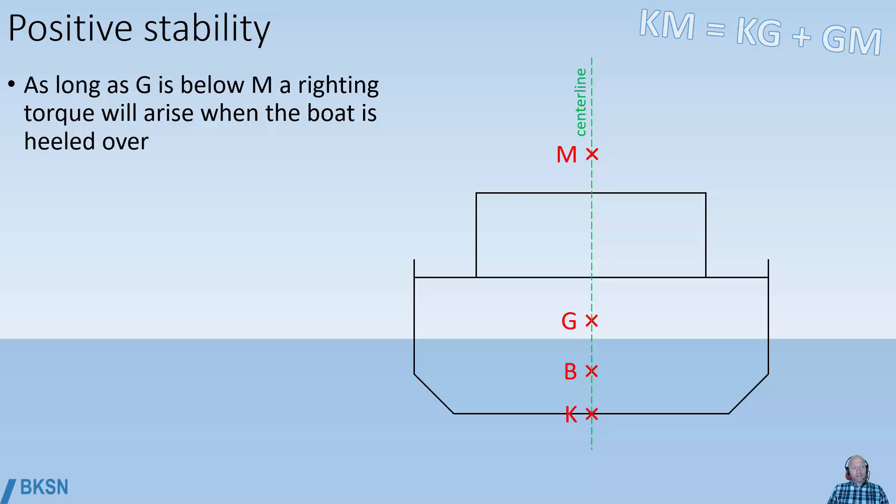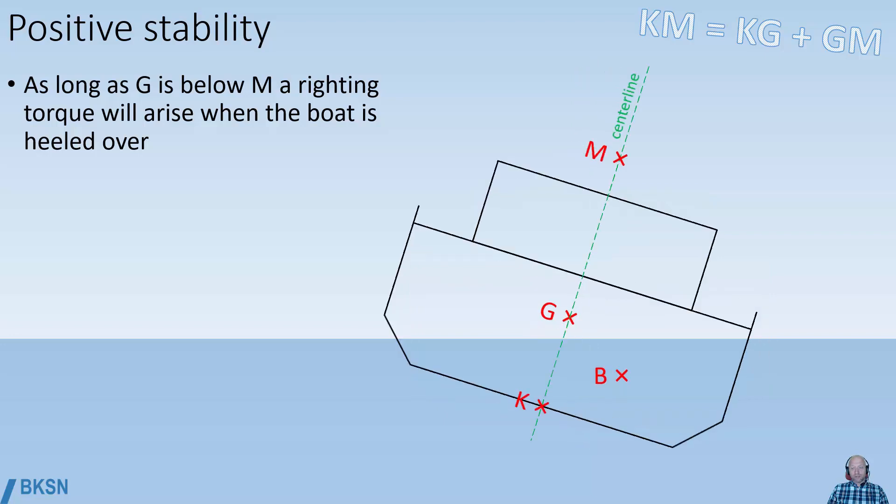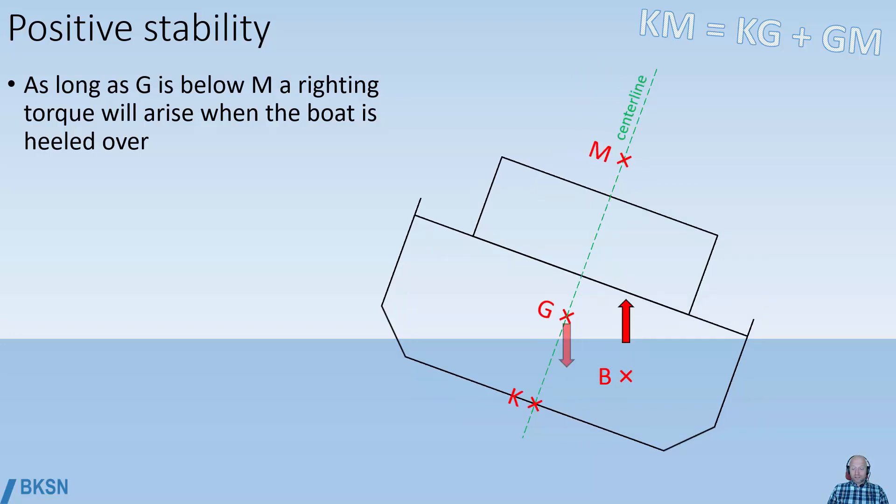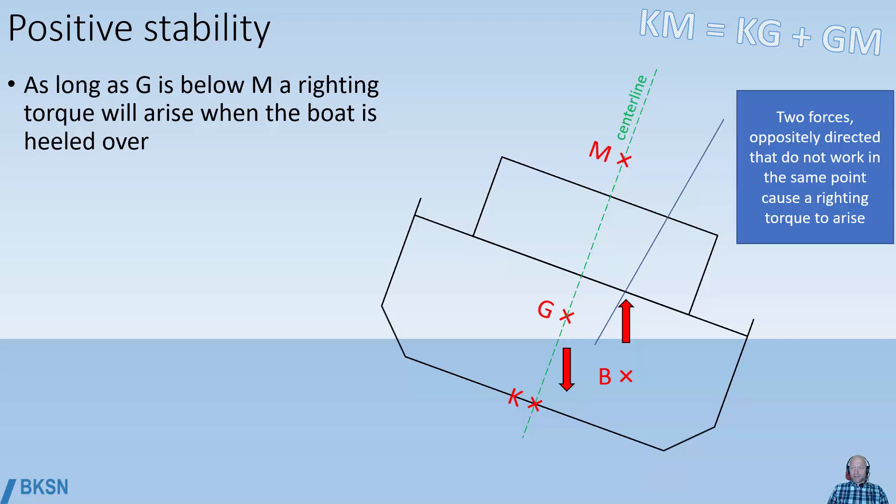Positive stability means that G is below M. If this is the case, a righting torque will arise when the boat is heeled over. We see the forces. There's a righting torque that tries to return the boat to the upright position.